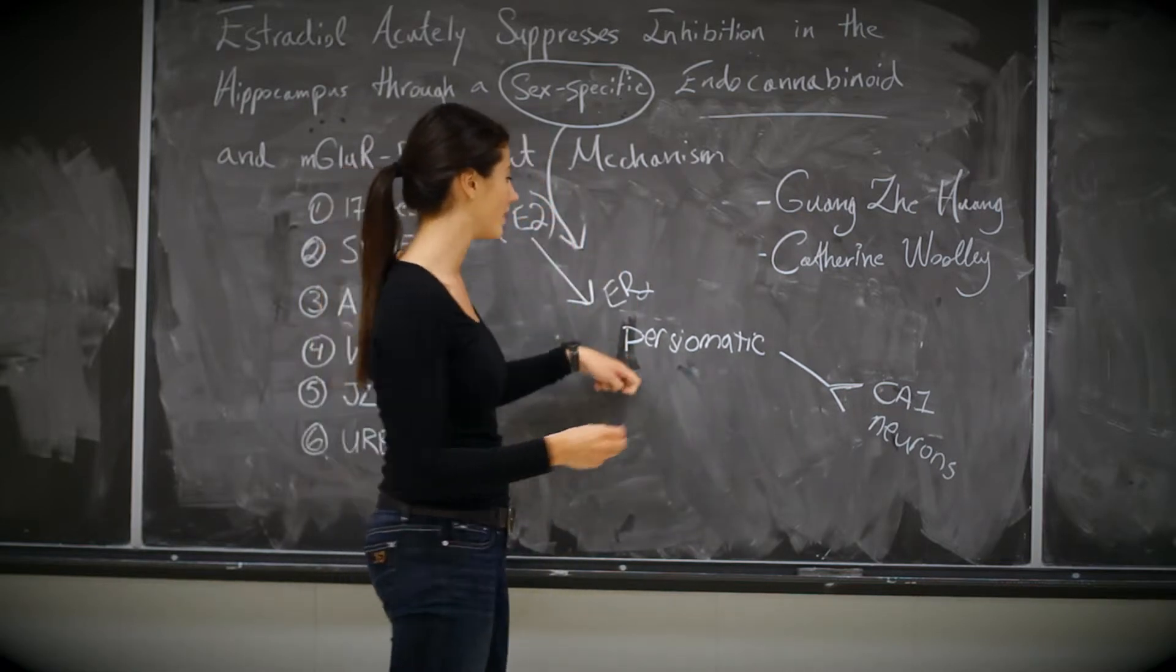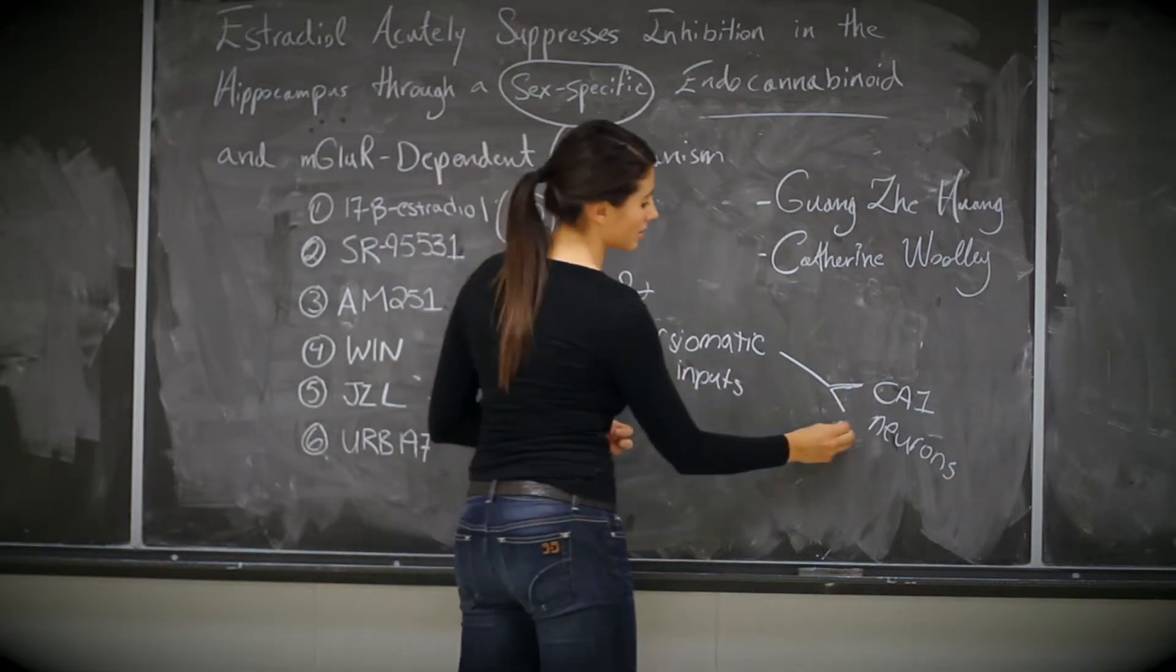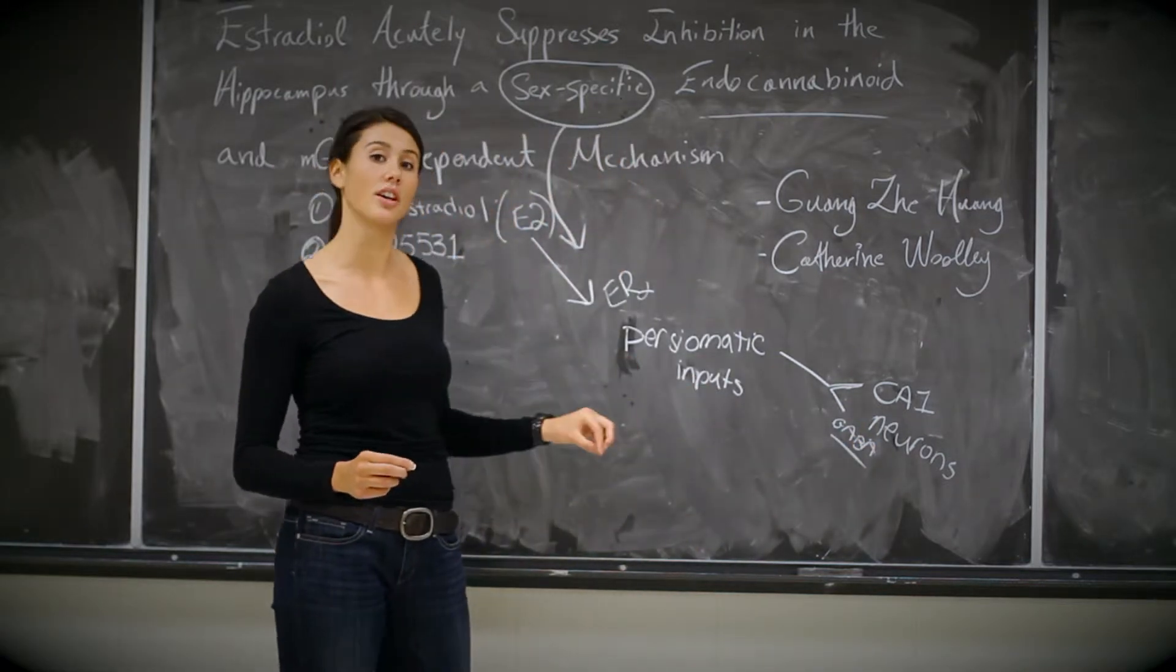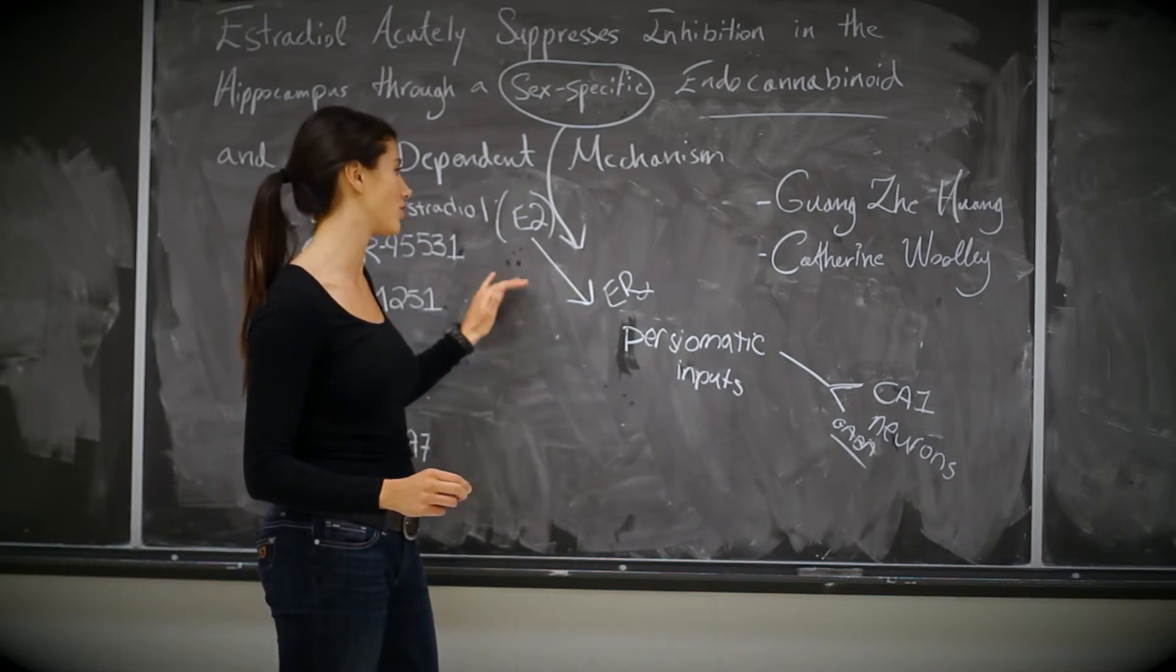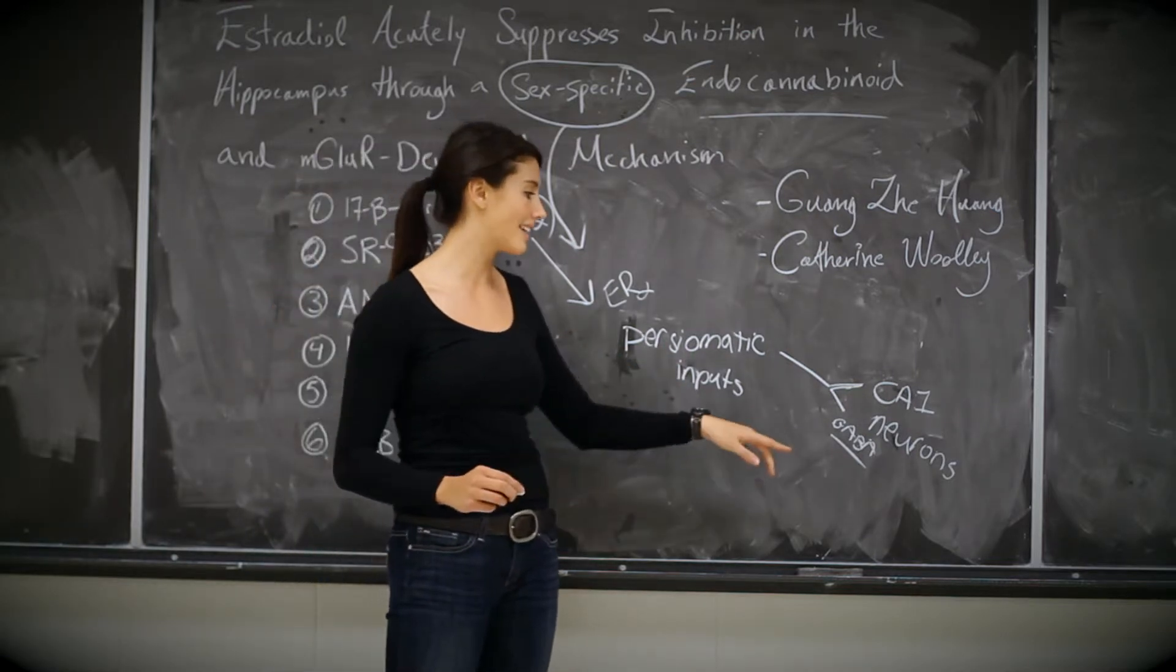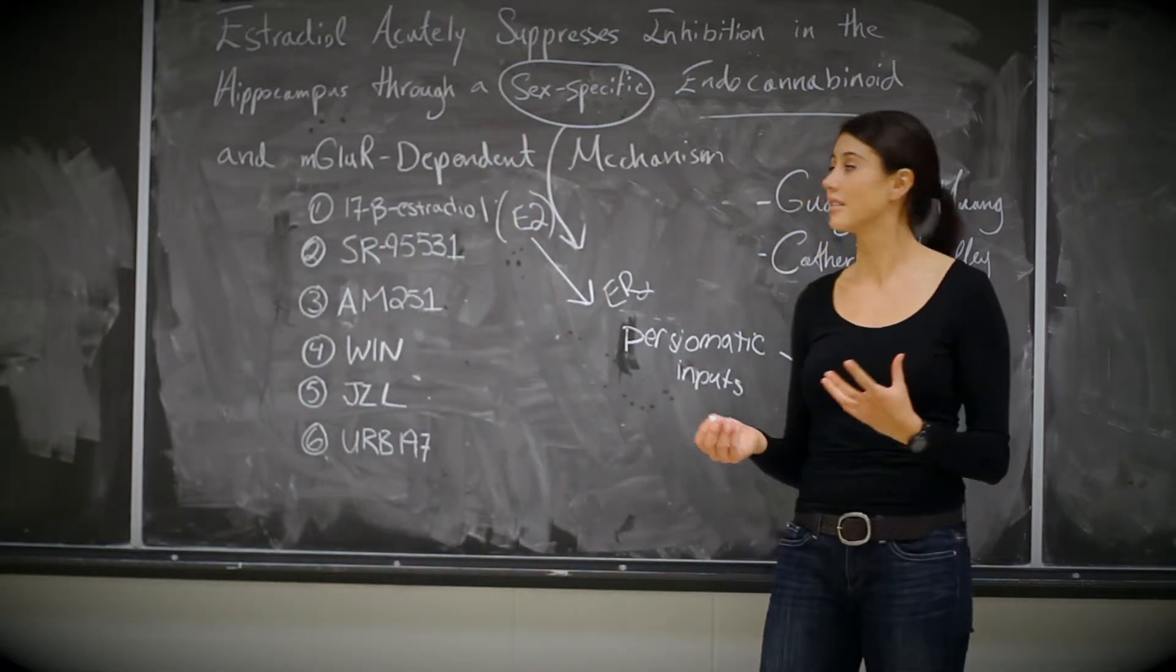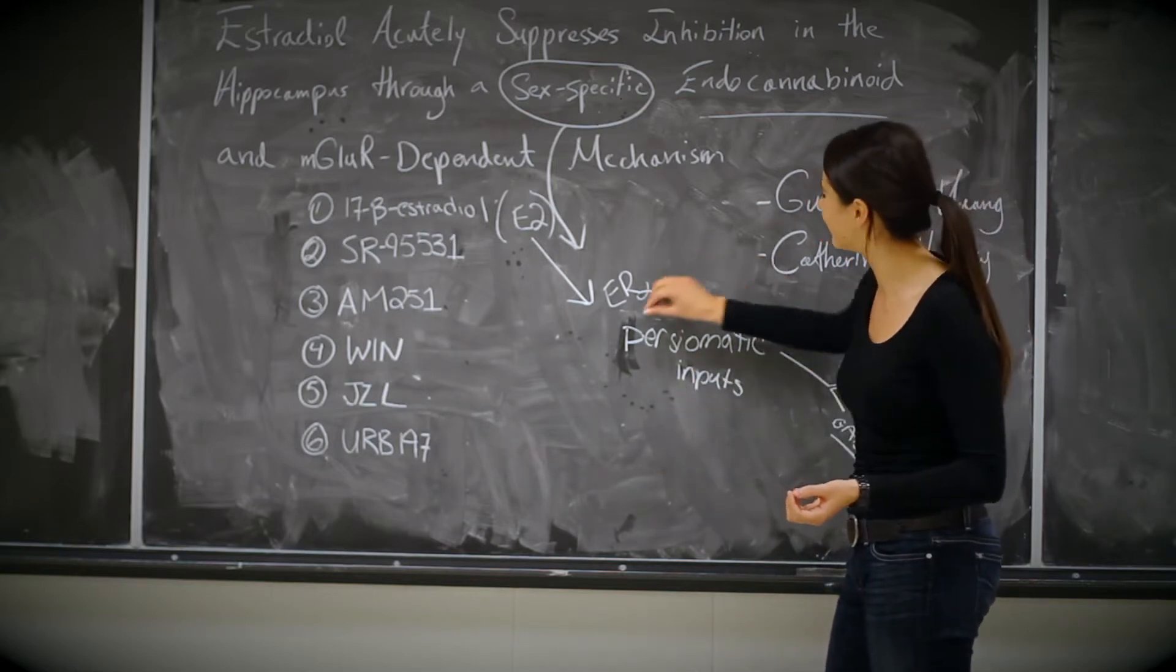So perisomatic, these inputs, they normally release GABA, which is an inhibitory neurotransmitter, so they normally cause the inhibition of CA1 neurons. But here, upon binding of estrogen or E2, it causes the disinhibition of CA1 neurons, so less GABA is released from the perisomatic nerve inputs. And this is found in a subset of cells known as estrogen-sensitive cells, a very well-named type of neuron.